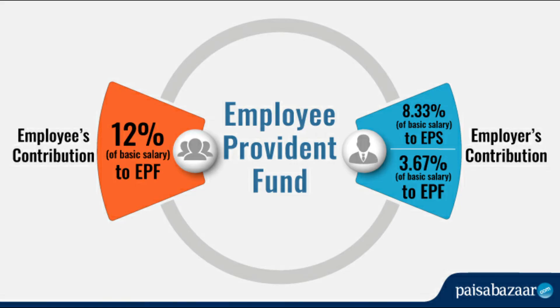First of all, let's look at PF Contribution. In our salary slip, basic plus DA — the sum is 10 percent. That is the PF contribution. One 10 percent is from the employee, and another 10 percent is from the employer, which is our organization.